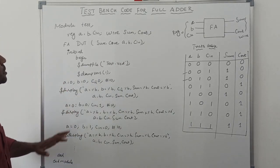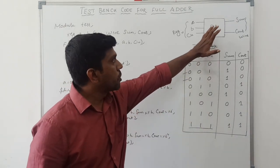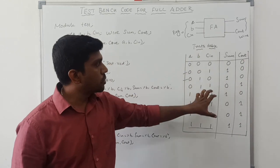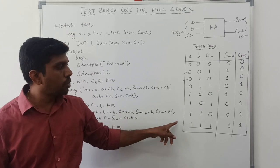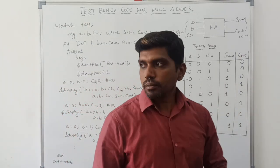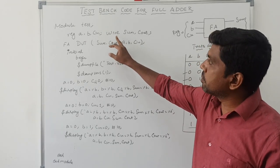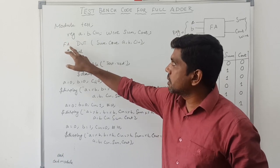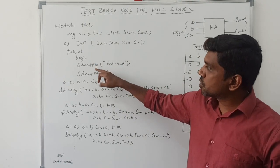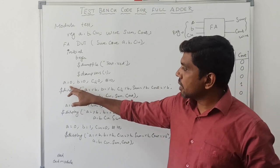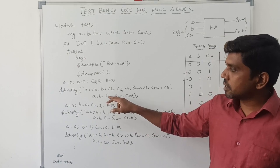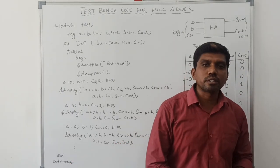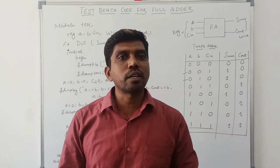This is the simple Verilog HDL testbench code for full adder. First draw the full adder block diagram, then assign input and output variables — input set as register, output set as wire. Write the truth table: 3 variables make 8 input combinations. Declare the module, declare variables, instantiate the full adder with DUT. Use initial-begin with dumpfile and dumpvars to simulate, assign inputs from 0 0 0 to 1 1 1 with 10ns delays, then end and endmodule. I hope you understood the concept — kindly subscribe.